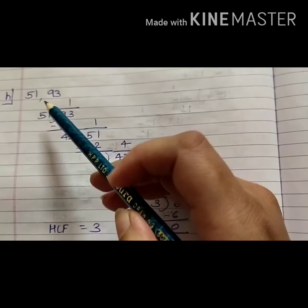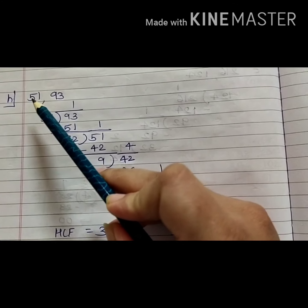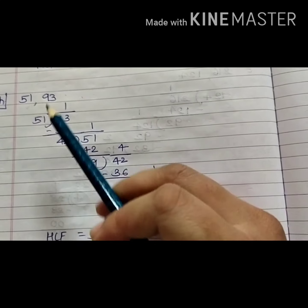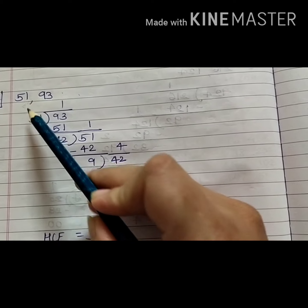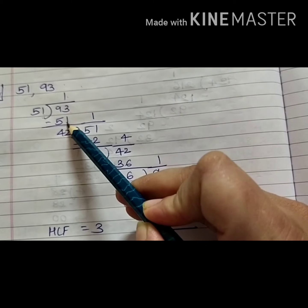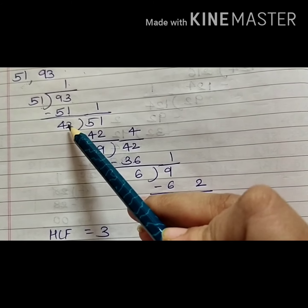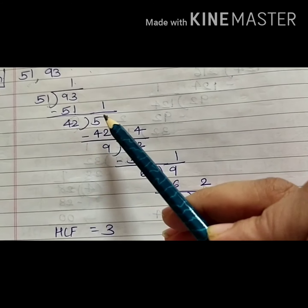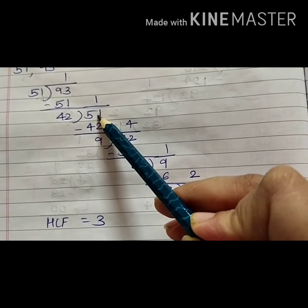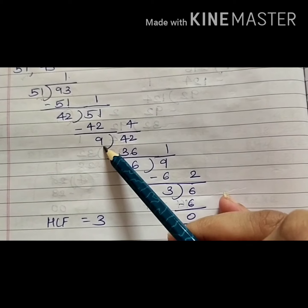Now I have taken the same sum from practice time 5, that is H1 — the numbers are 51 and 93. The smaller number, 51, will be the divisor and 93 will be the dividend. I start my division — 51 ones are 51. I get the remainder as 42. This will be my next divisor, and the next dividend will be the previous divisor, 51. Then 42 ones are 42; I get the remainder as 9.